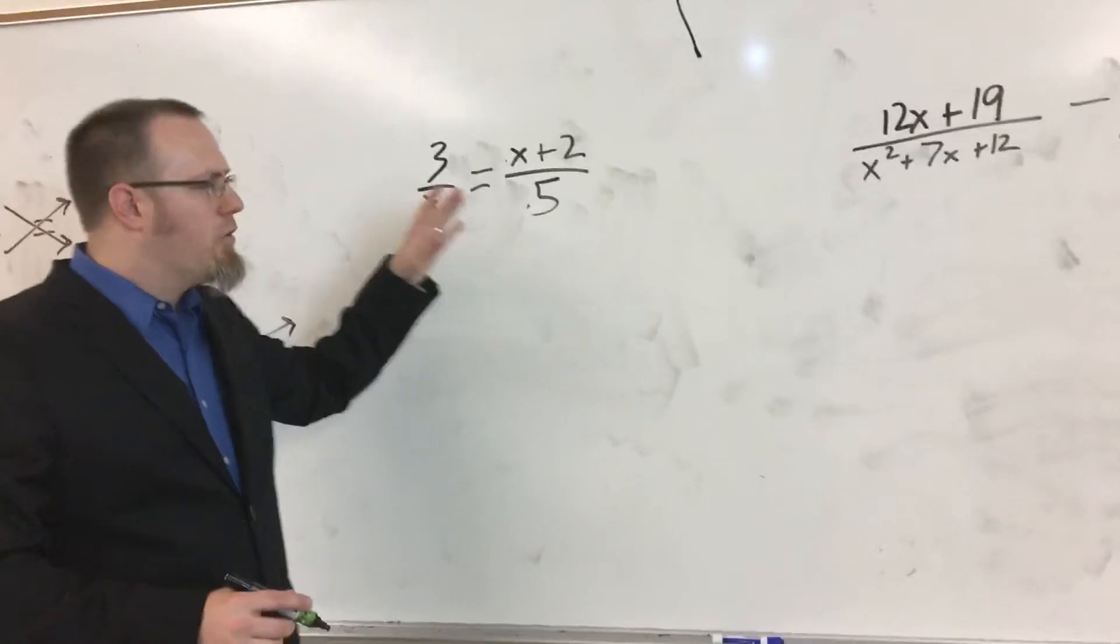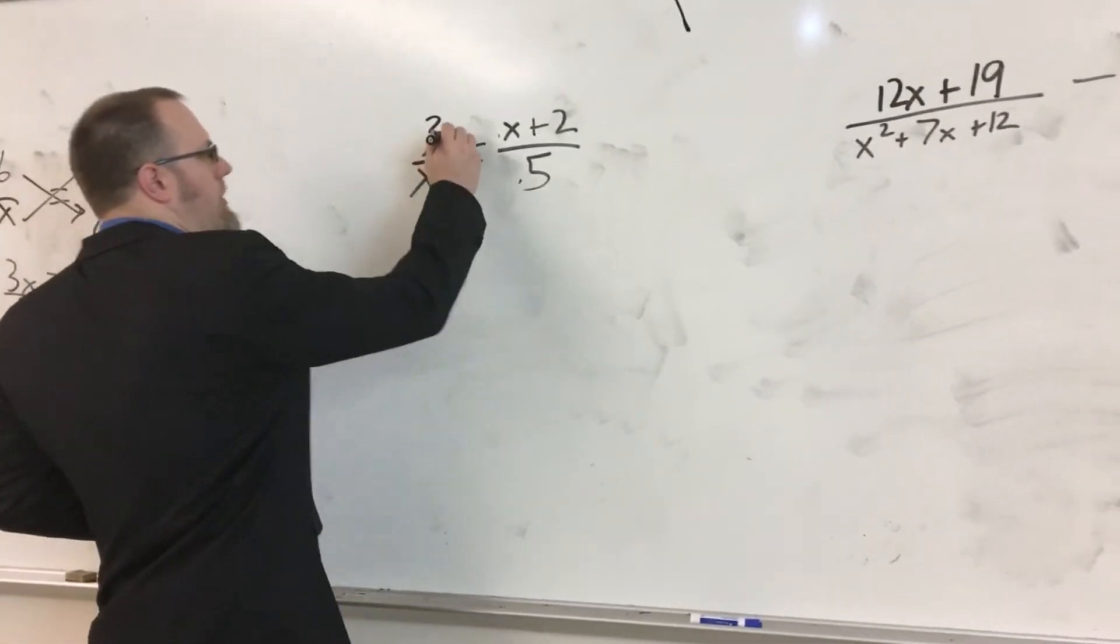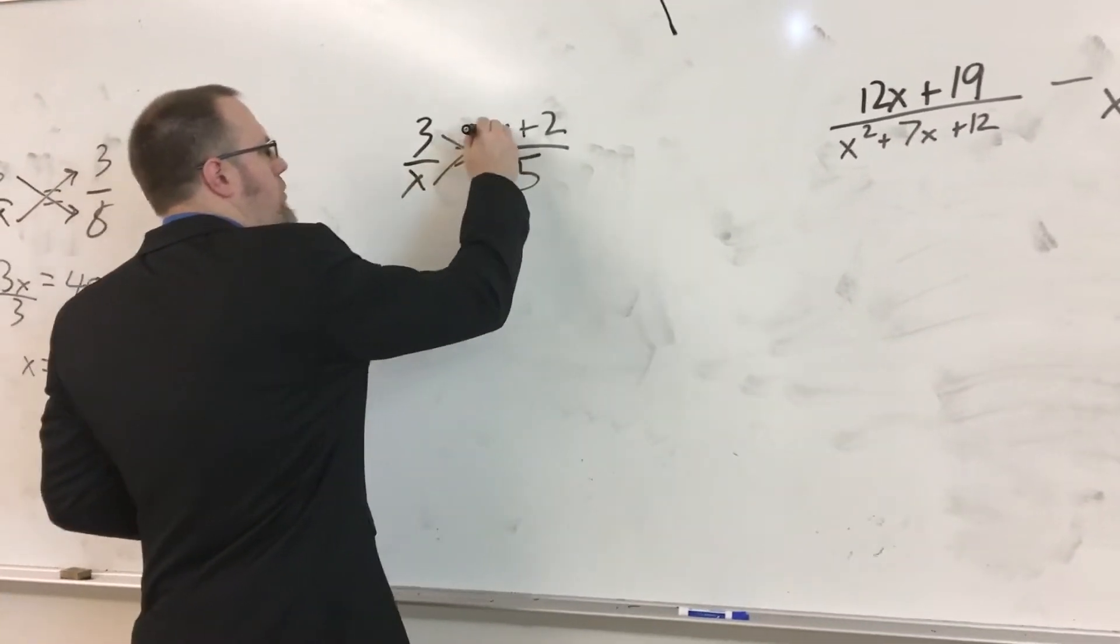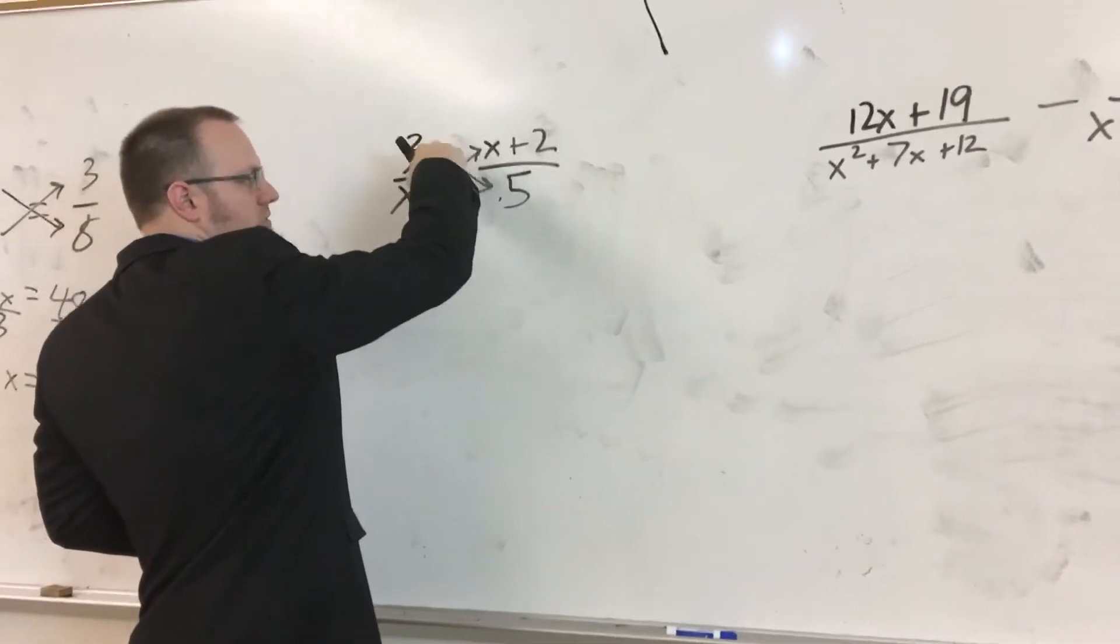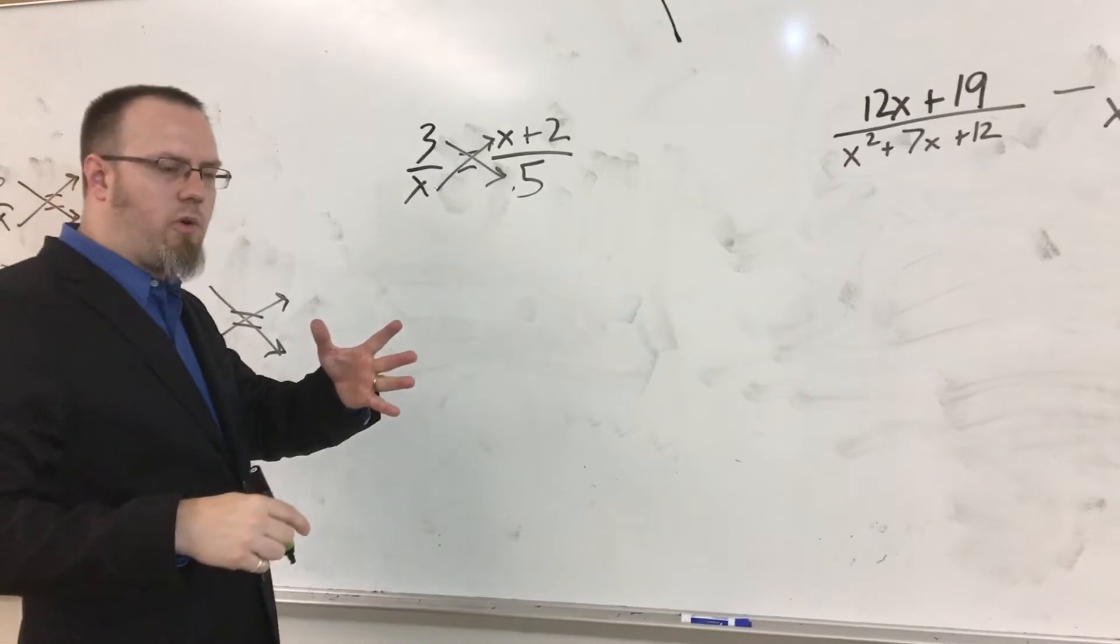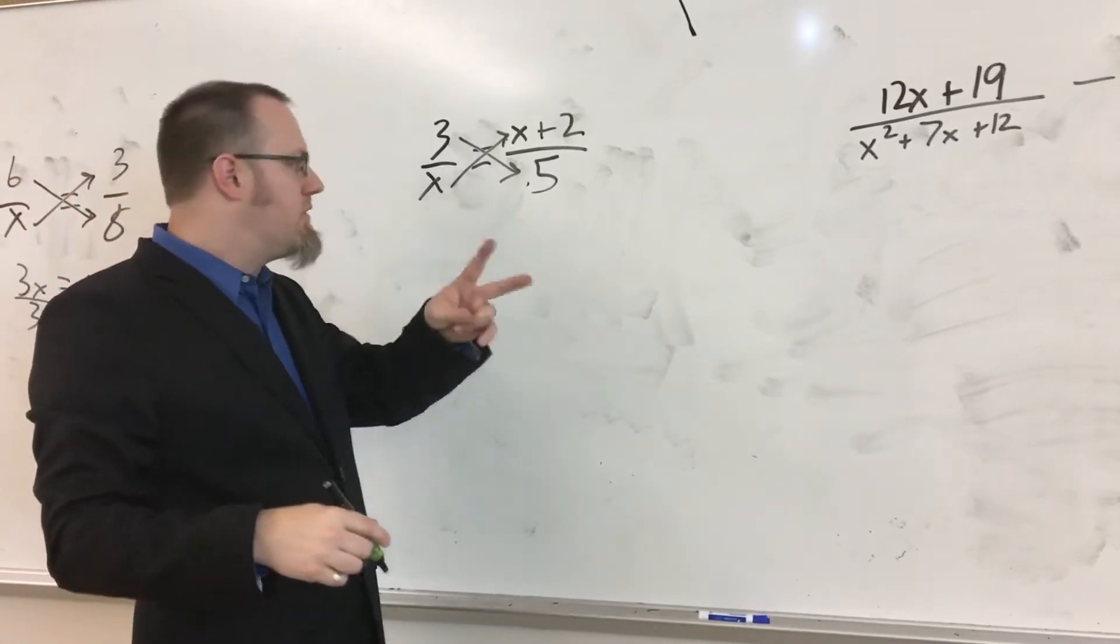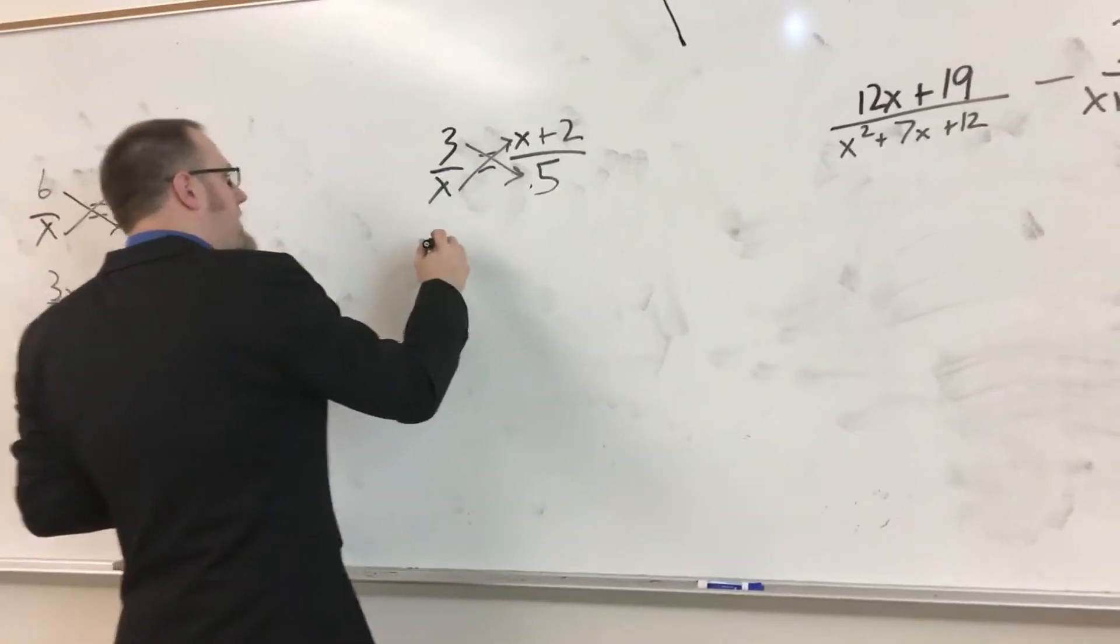On this one here, we have another one where we're going to cross multiply. And in this case, when we cross multiply, we're going to be multiplying this x. We're going to be distributing it by both of these, and it's going to give us an x squared, which should mean we get two answers.